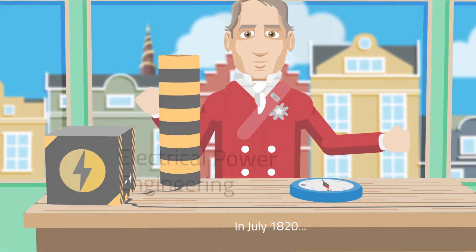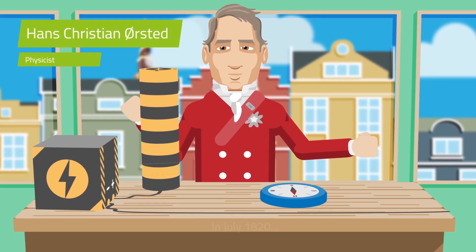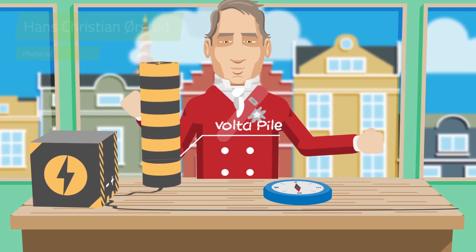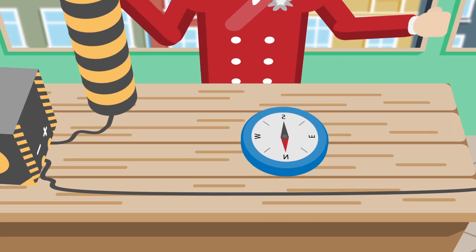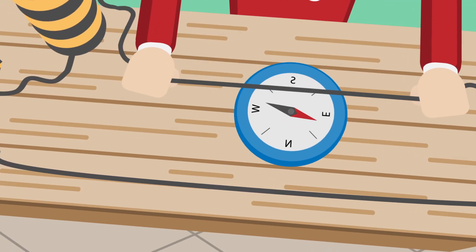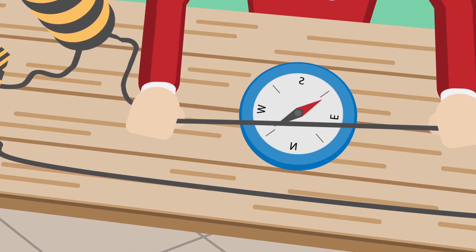In 1820, in the month of July, Hans Christian Ørstedt, a Danish physicist, carried out experiments with a Volta pile, an early-type battery that supplied current. Ørstedt noticed that a compass needle moved when it came close to the current-carrying conductors on his workbench.